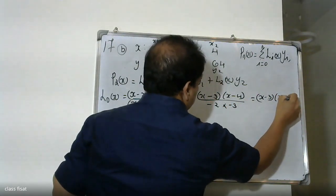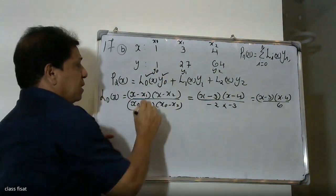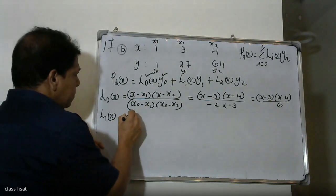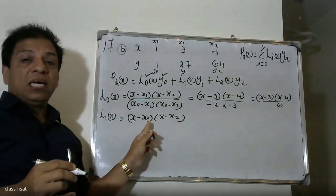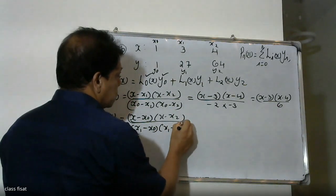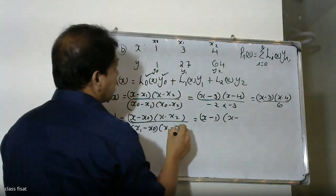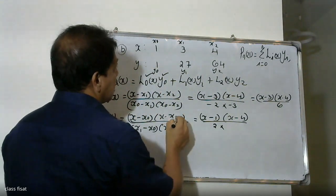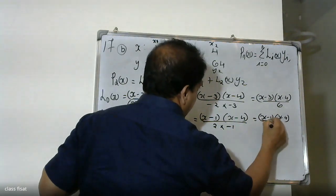So L0(x) = (x − 3)(x − 4) divided by the denominator. Substituting: x0 minus x1 is 1 minus 3 = minus 2, and x1 minus x2 is 3 minus 4 = minus 1. Therefore L0(x) = (x − 1)(x − 4) divided by minus 2.